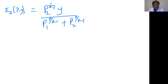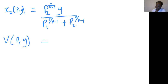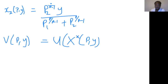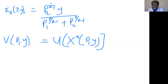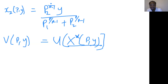These were our Marshallian demand functions for x1 and x2. The indirect utility function is always represented as a function of p and y, which is the same as the utility evaluated at the optimal x, which is itself a function of p and y. So when you substitute x1 and x2 in the direct utility function with the Marshallian demand functions, what you get becomes your indirect utility function — a function of prices and income.